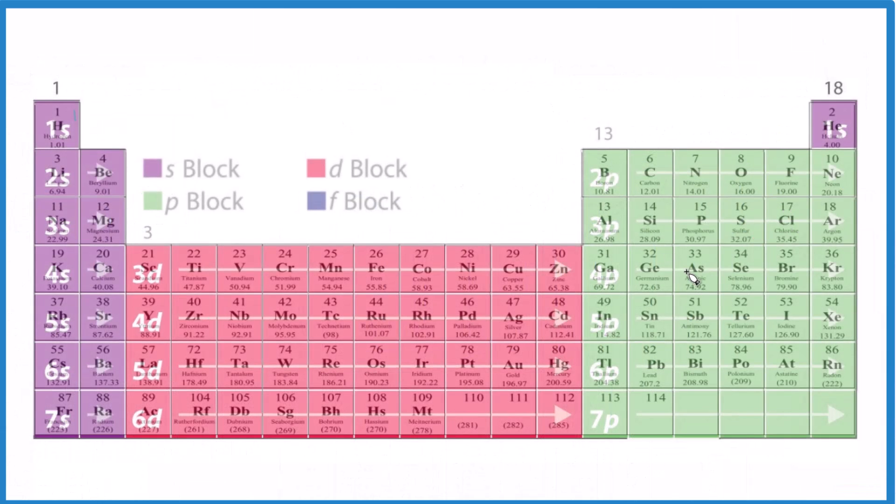So here we have the periodic table broken up into orbital blocks. We have the s orbitals, d, all the p's here. So if we find helium right here as atomic number two, it only has two protons. These are all neutral. It only has two electrons.